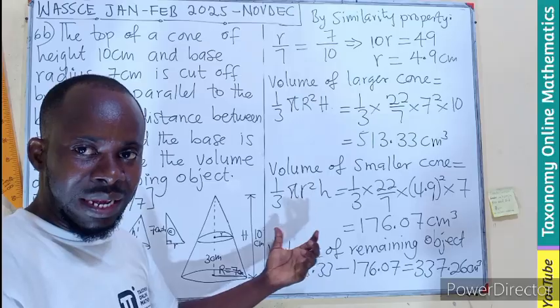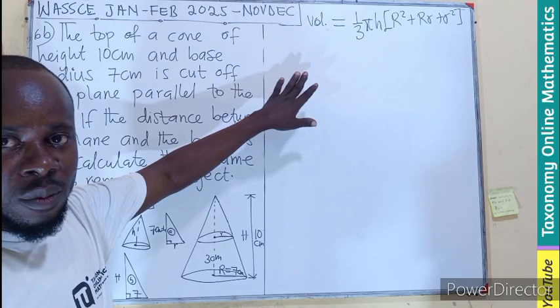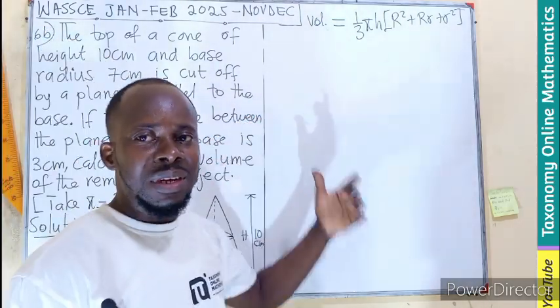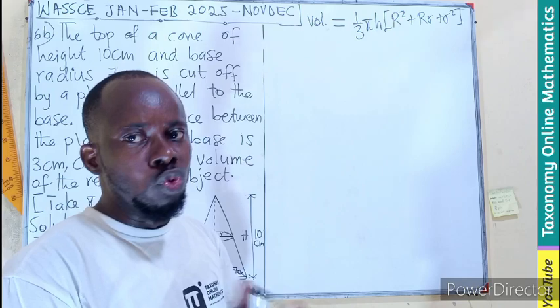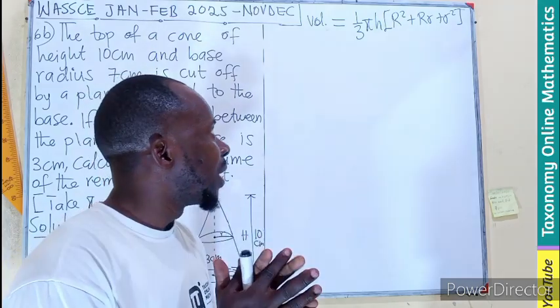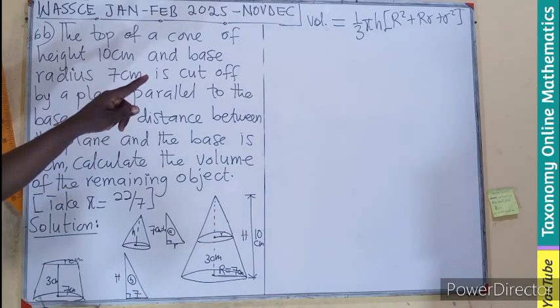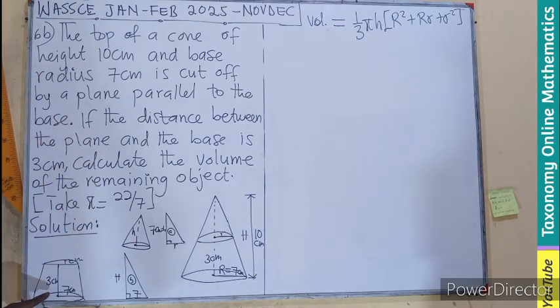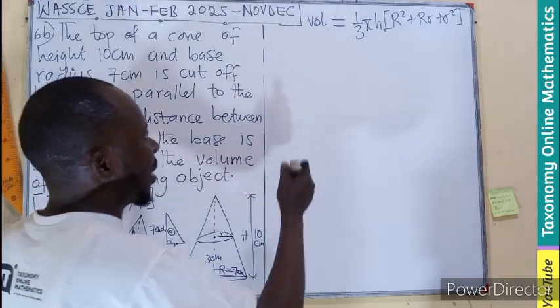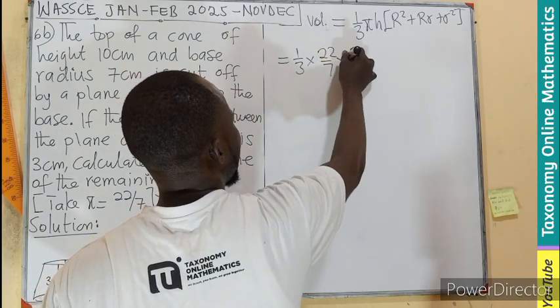Next, I will use the formula method also, so that we can also get the same answer. So by the formula, this is the formula method. If you want to know how the formula is derived, just visit the playlist on mensuration 2. Locate how to derive the volume of a frustum. There is a video episode on that. You can check it out. So this is what we are going to have. Remember, what we are looking for is this. So the h you are seeing there is the height. The capital R you are seeing here is the radius of the base. The small r you are seeing is the radius of the top opening.